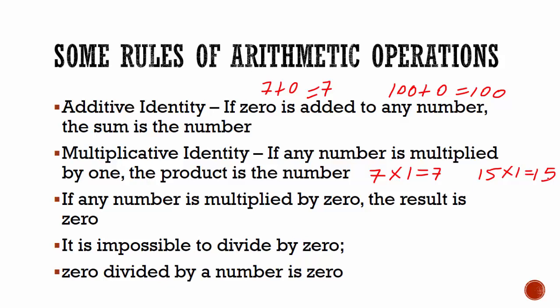The third point I want to make today is that if any number is multiplied by 0, the result is 0. 4 multiplied by 0 is equal to 0. 1 multiplied by 0 is equal to 0. 200 multiplied by 0 is equal to 0.